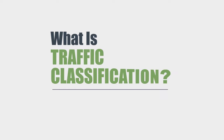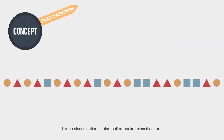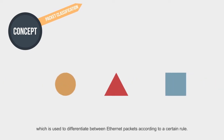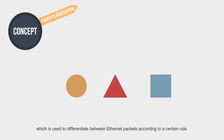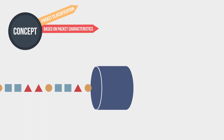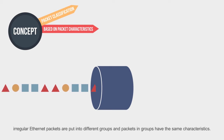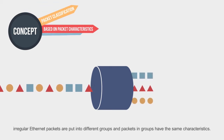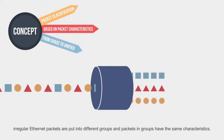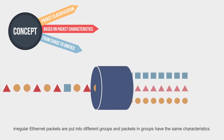What is Traffic Classification? Traffic classification is also called packet classification, which is used to differentiate between Ethernet packets according to a certain rule. After the differentiation, irregular Ethernet packets are put into different groups, and the packets in each group share the same characteristics.